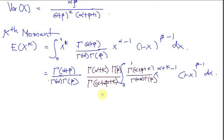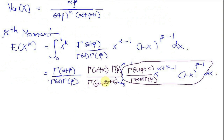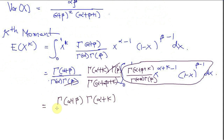Now, as you can see, this quantity inside the integral is the probability density function of a beta distribution. So that integral goes to 1. And gamma of beta cancels with gamma of beta. Then I have the expected value of x to the power of k equal to gamma of alpha plus beta times gamma of alpha plus k divided by gamma of alpha times gamma of alpha plus beta plus k.